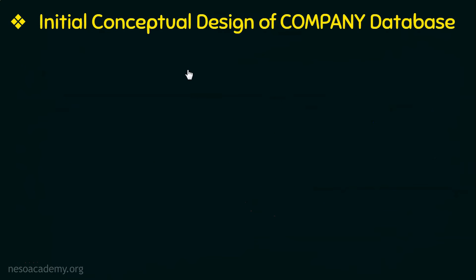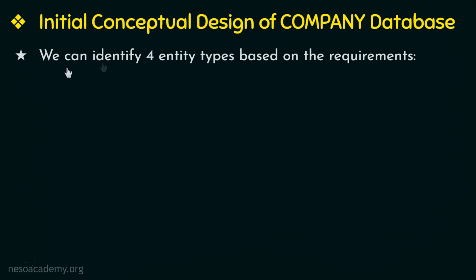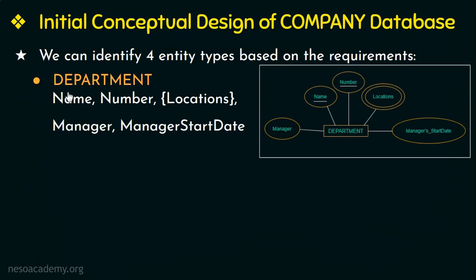The next step after collection of requirements is conceptual design. Based on the requirements gathered, we can identify four entity types. The first entity type is department, with attributes like department name, department number, locations, the manager, and the manager start date. Since a department can have several locations, the locations attribute is multi-valued and is represented by a double oval.